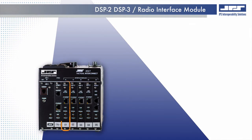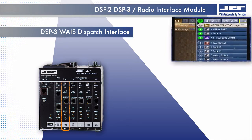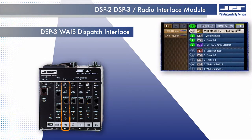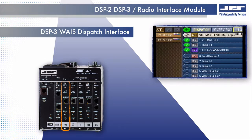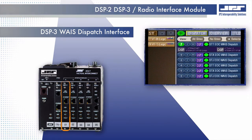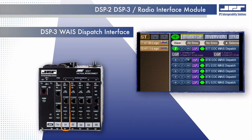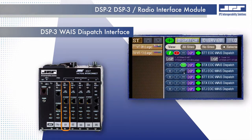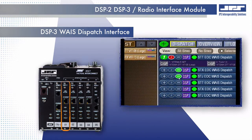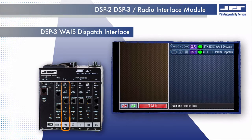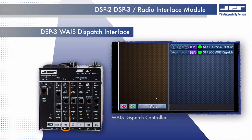The DSP3 module shares all the radio-centric and ROIP capabilities of the DSP2 module and can be used in any simple ACU interoperability gateway system. It does have a unique attribute which is an ROIP dispatch function used exclusively in WAIS extended and WAIS enterprise dispatch systems.